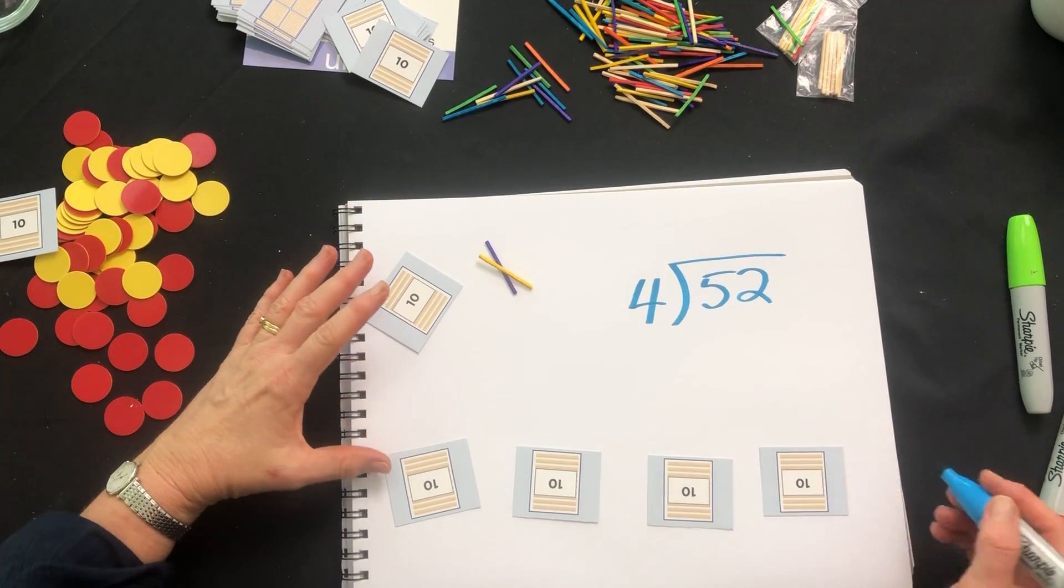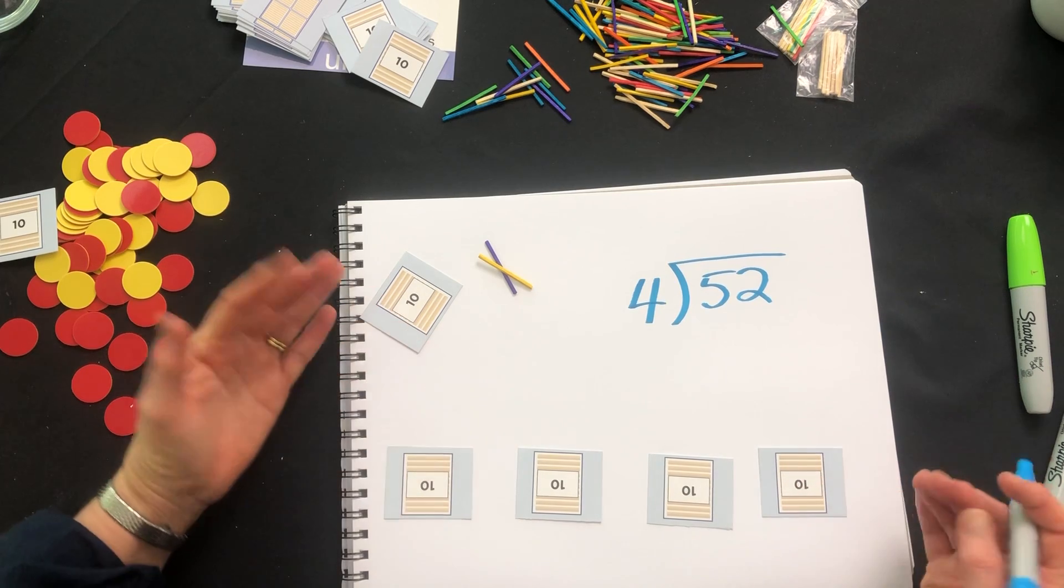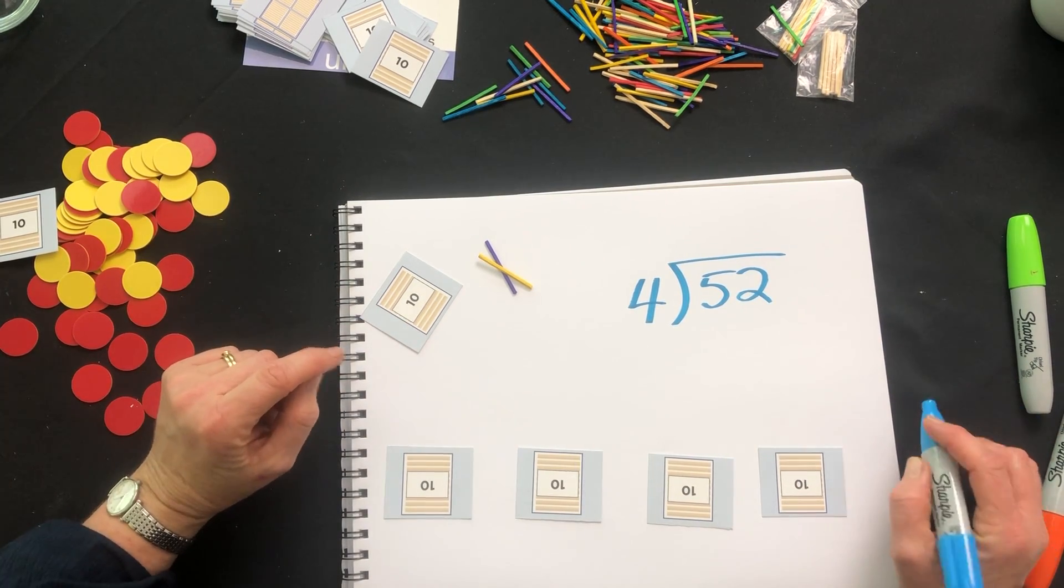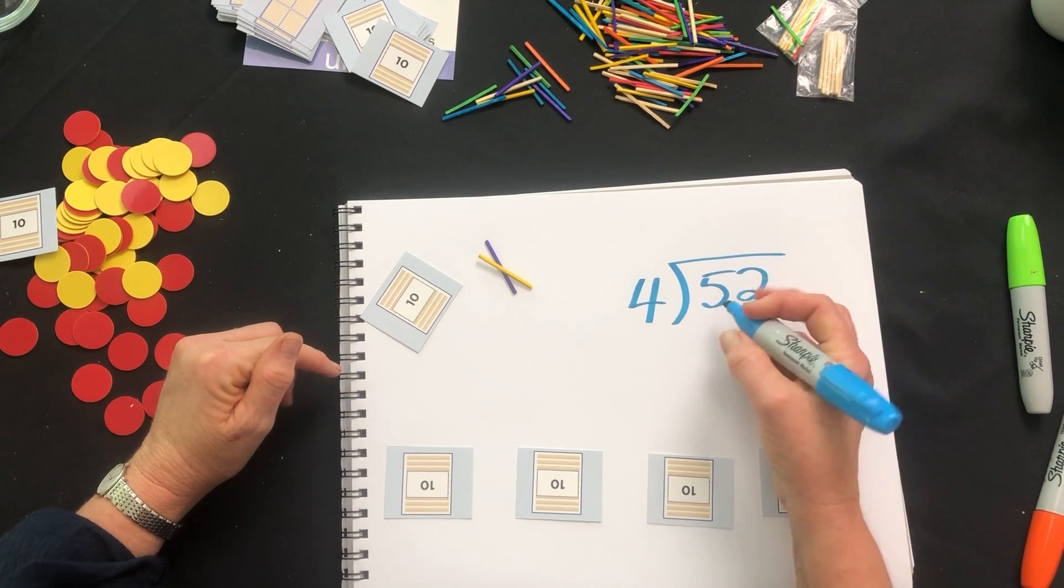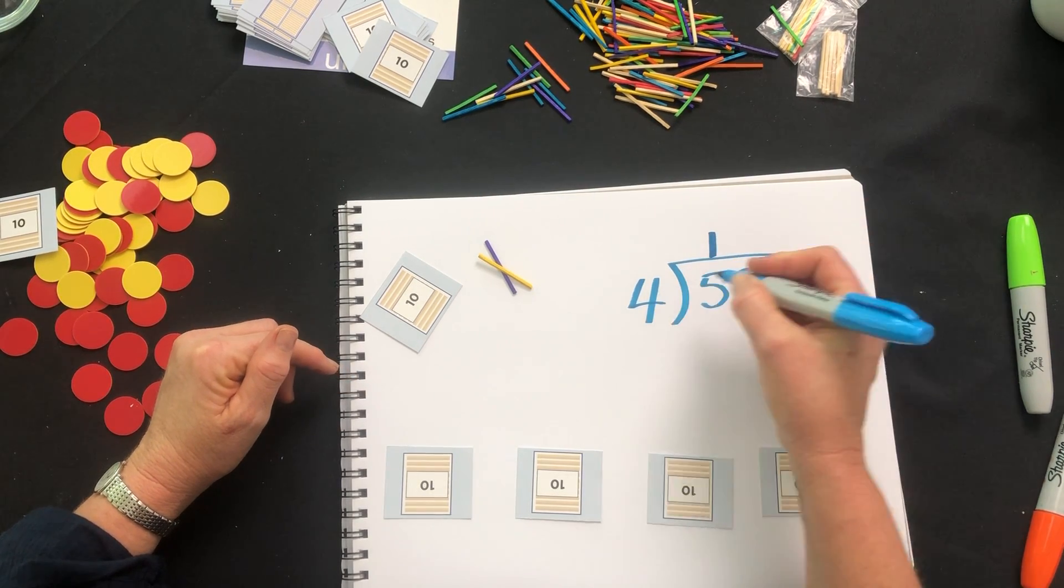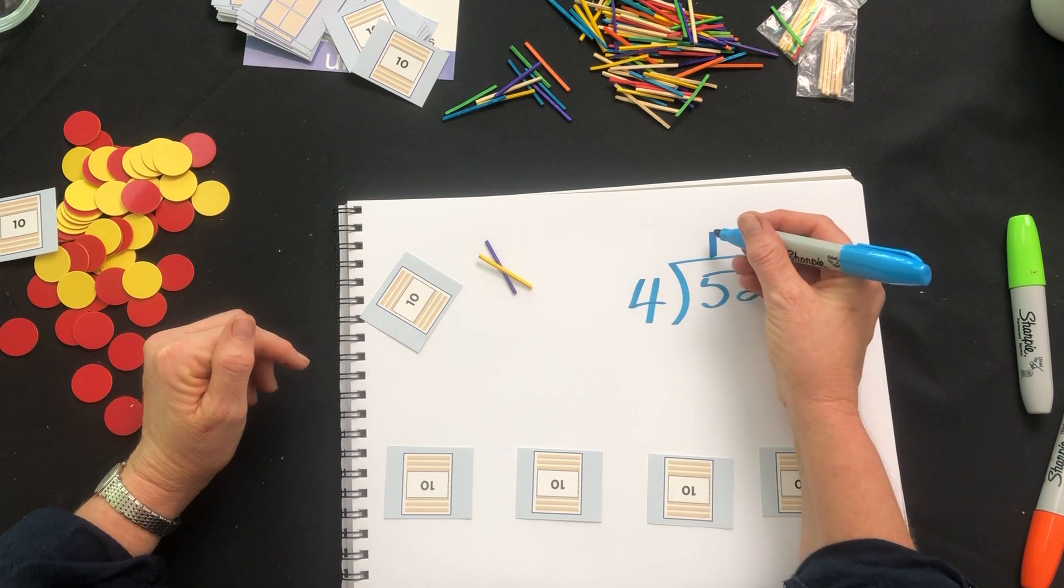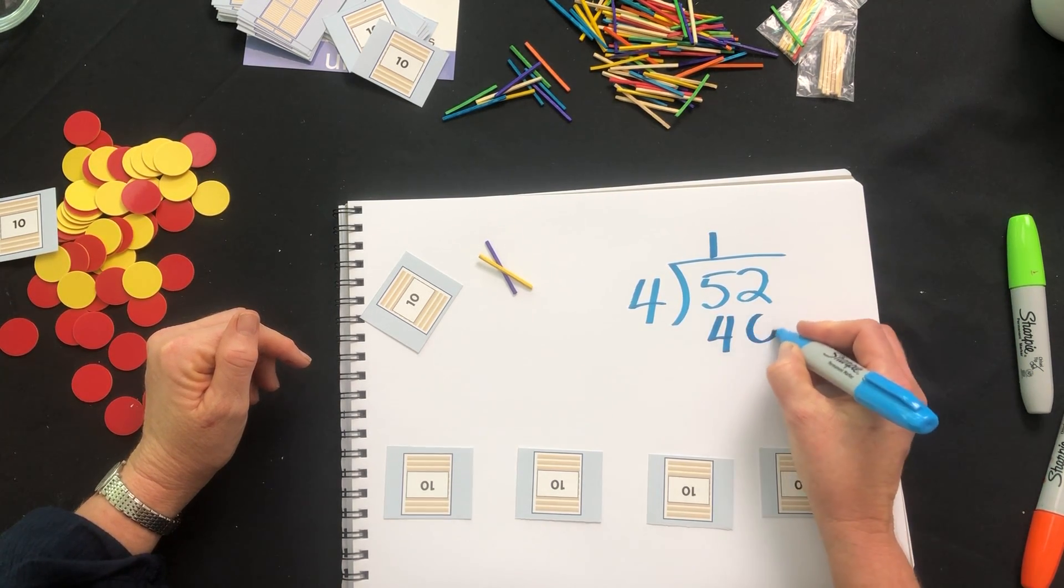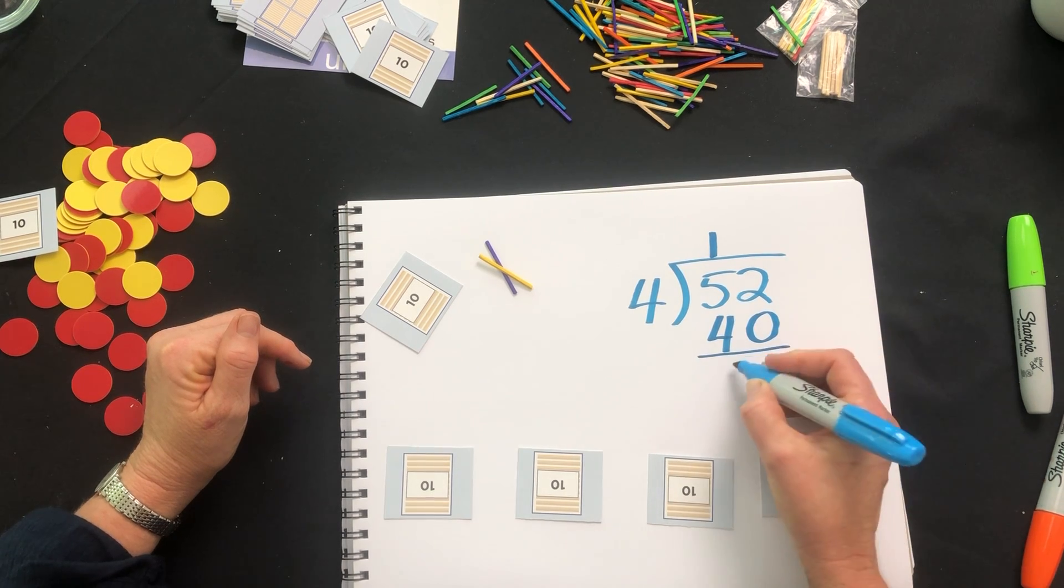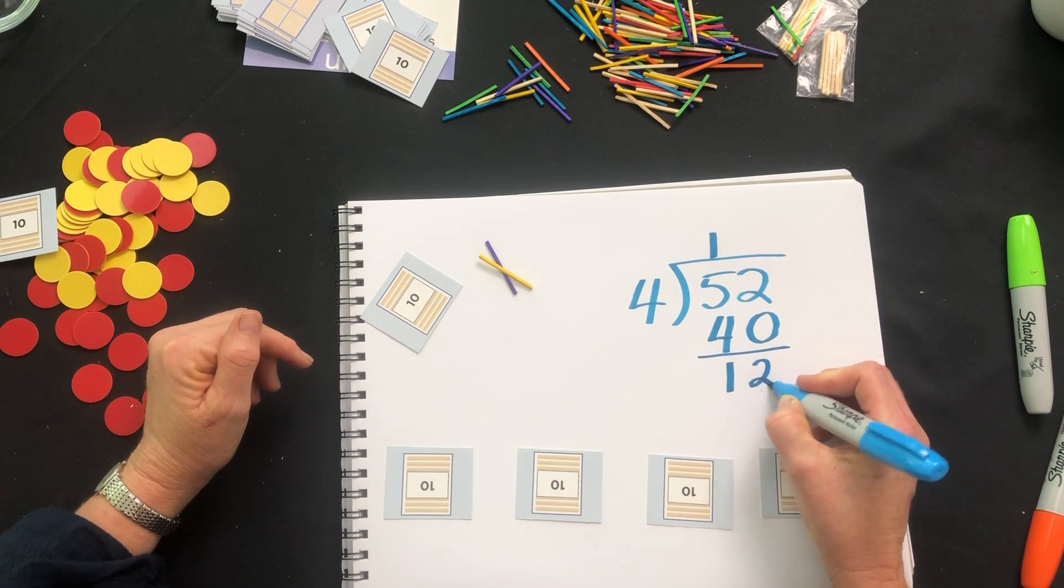And we noticed that that used up 40 of our cards or four of our tens. We used to write our one here four goes into five or four goes into 50 ten times and we knew that that was 40 which would leave us with a remainder of 12.